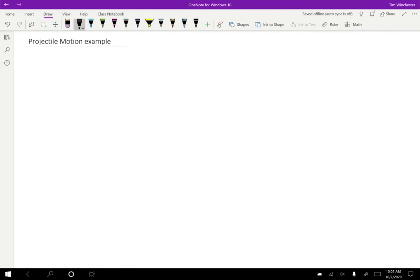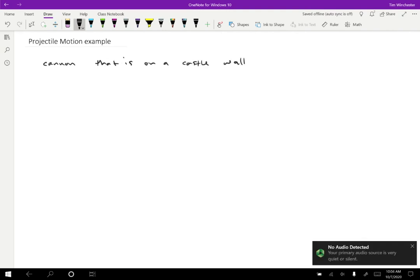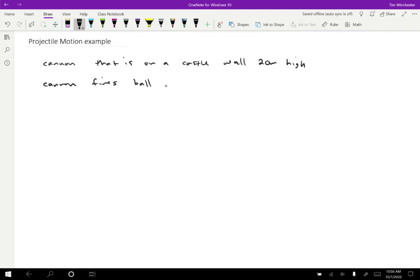What is going to be happening here is we're going to imagine a cannon that is on a castle wall that is 20 meters tall, and the cannon fires a cannonball at 100 meters per second in a direction 30 degrees above the horizontal. And the question we want to find is how far does the ball go?